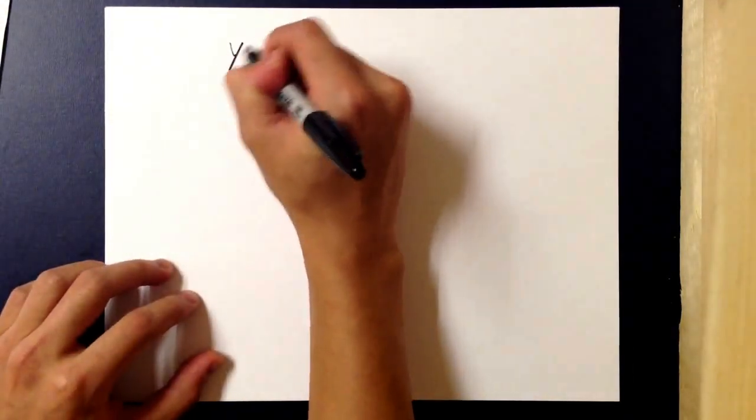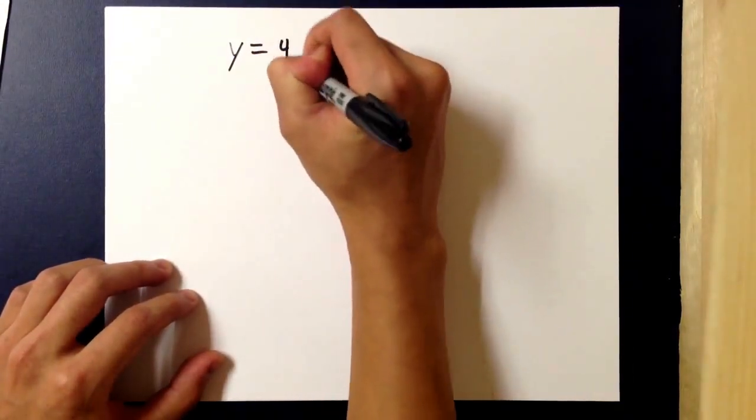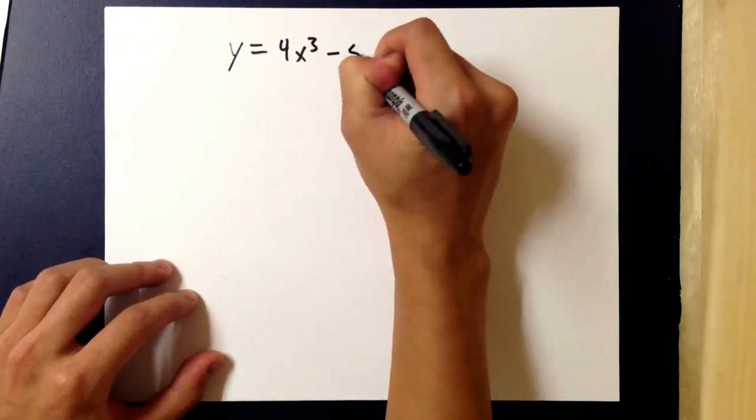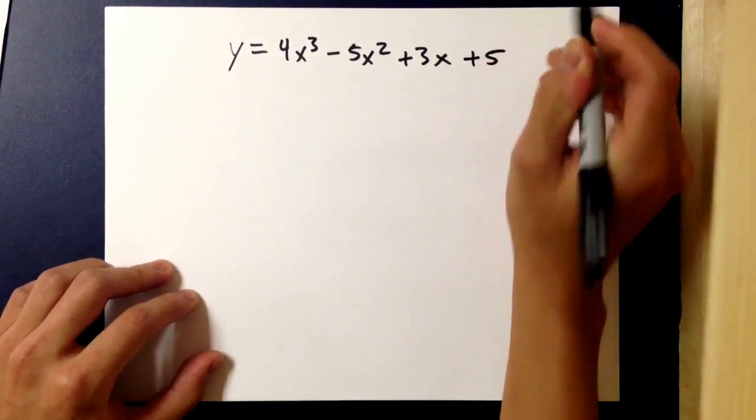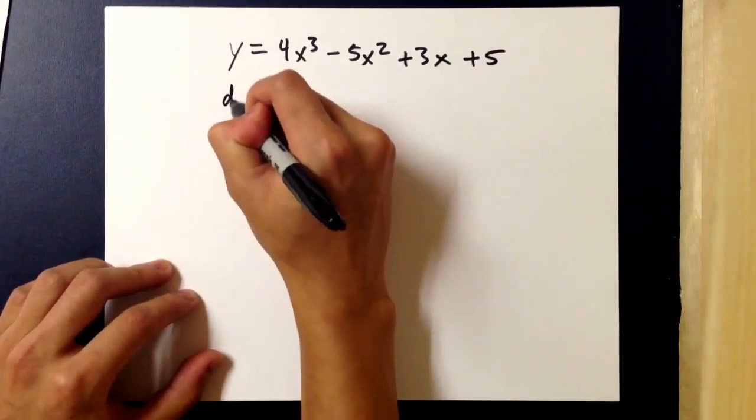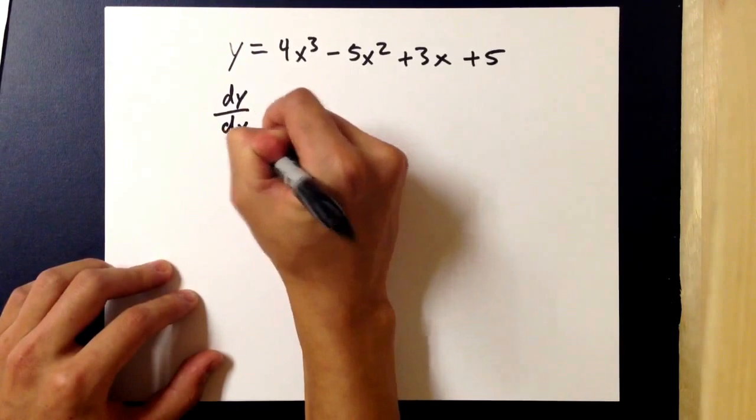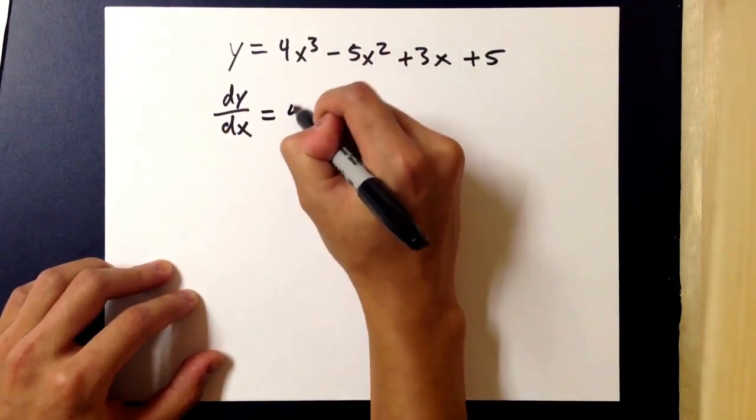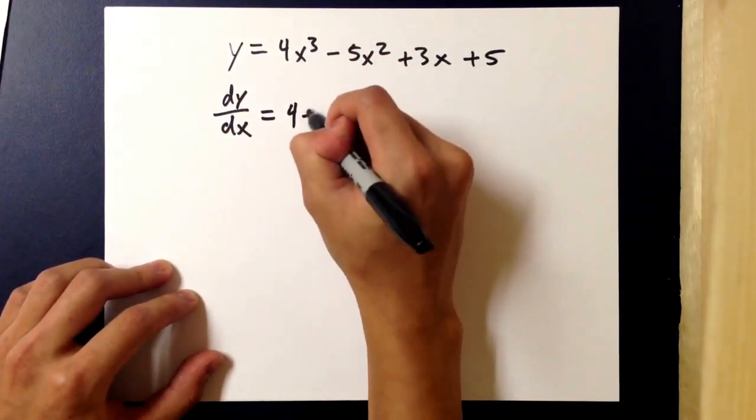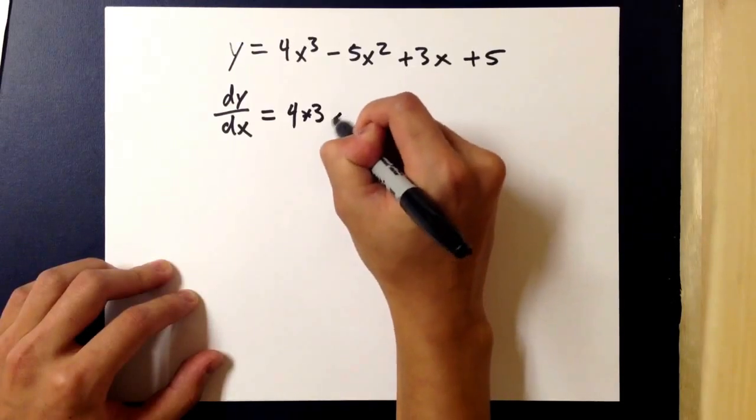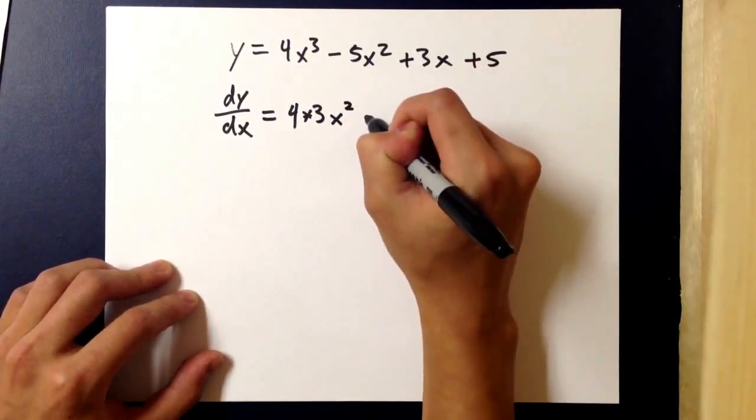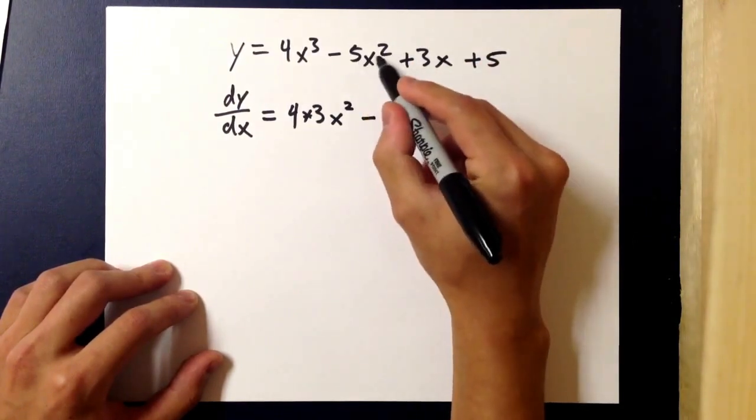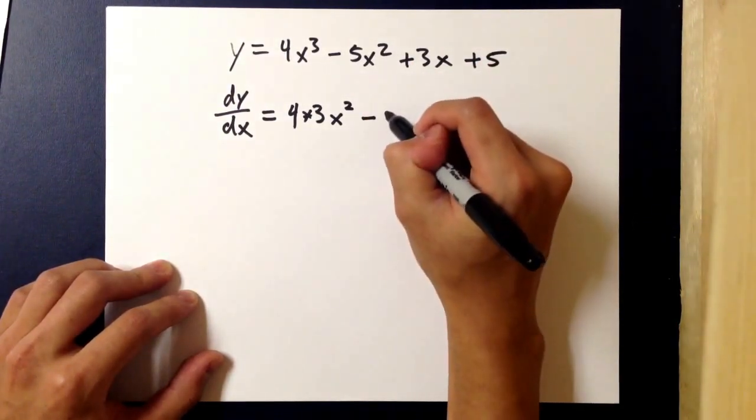So, let's have the example y equals 4x cubed minus 5x squared plus 3x plus 5. The derivative of this, using the power rule, would be 4 times the exponent as we bring it down, x to the 3 minus 1 so that becomes 2, minus 5 times the derivative as it comes down again.